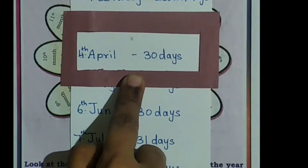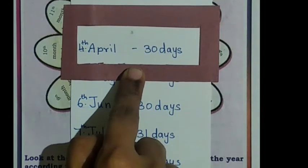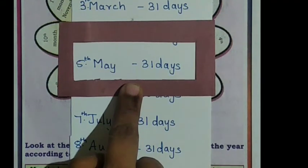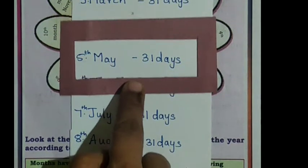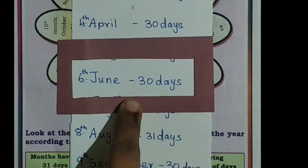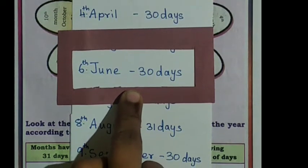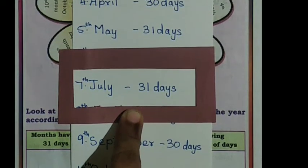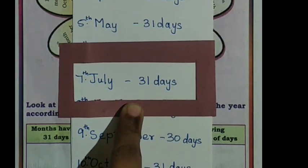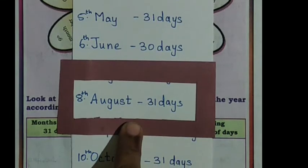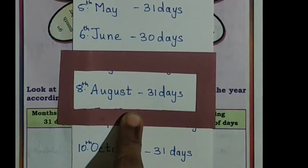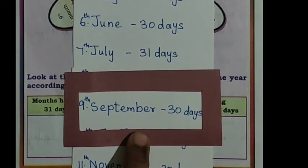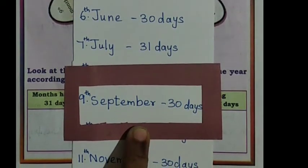Fourth Month of the Year is April. It has 30 Days. Fifth Month of the Year is May. It has 31 Days. Sixth Month of the Year is June. It has 30 Days. Seventh Month of the Year is July. It has 31 Days. Eighth Month of the Year is August. It has 31 Days. Ninth Month of the Year is September. It has 30 Days.